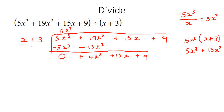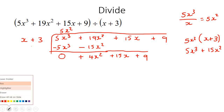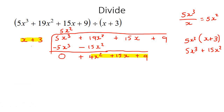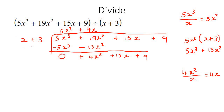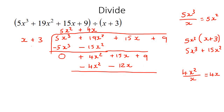Now we start the process all over again. We look at the largest power here and the largest power here — that's going to be 4x squared and the x. So 4x² divided by x gives us 4x. Then we take 4x and multiply it with this, giving us 4x² plus 12x. Then we switch the signs and add: the 4x² terms cancel, and 15x minus 12x becomes 3x, then plus 9.